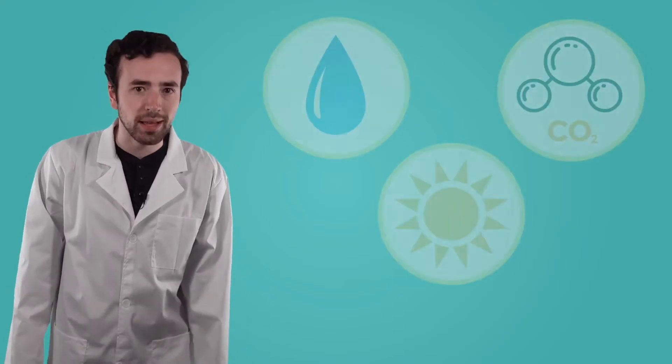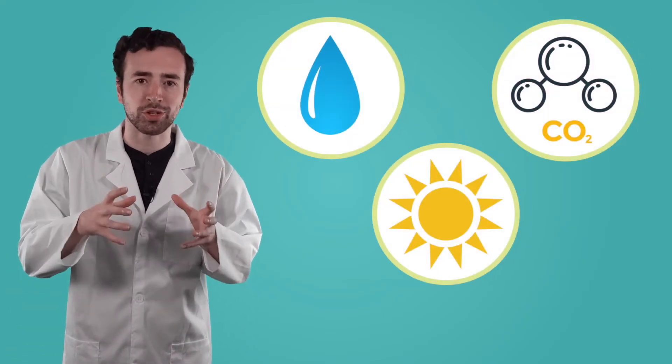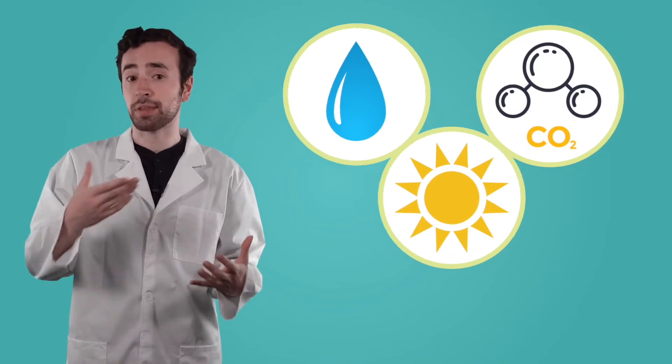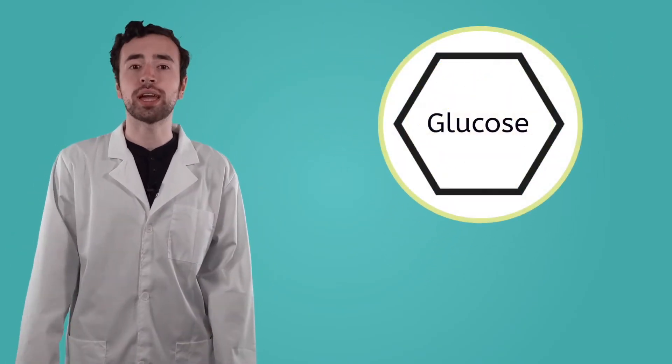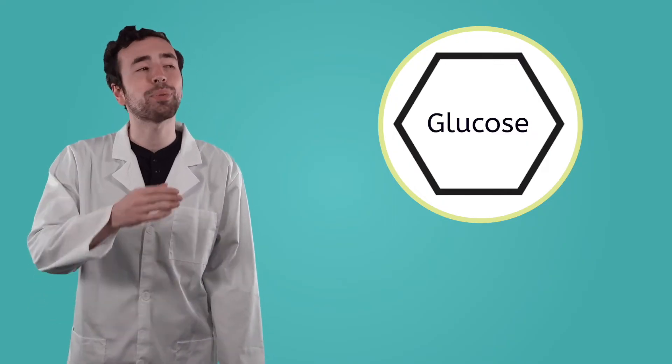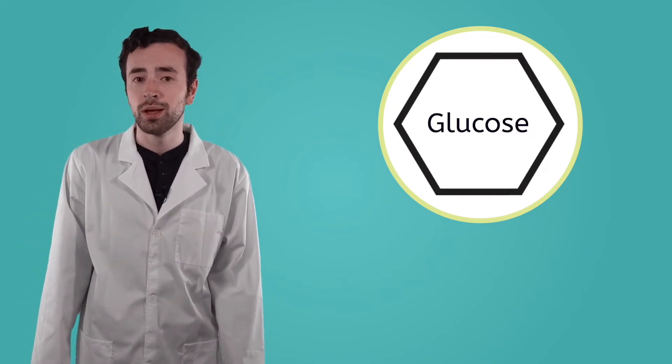The plant can then use that light energy to power a chemical reaction between the water and the carbon dioxide. That reaction between them creates glucose, a type of sugar that plants use as food. So, by combining the water absorbed by their roots, the carbon dioxide taken in through the stomata on their leaves, and the light energy absorbed by the chlorophyll in their chloroplasts, plants are able to make their own food through the process of photosynthesis. Now that you know a lot more about this process, pause the video here and complete the diagram in your guided notes.